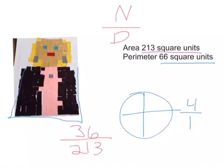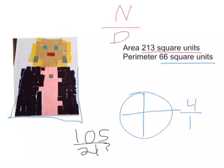And then, for black, what I did was on top of there, on top of black, was 105, because there were that many squares of black. And the total number is 213, 213 on bottom.